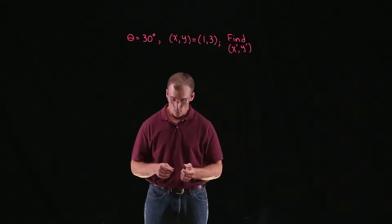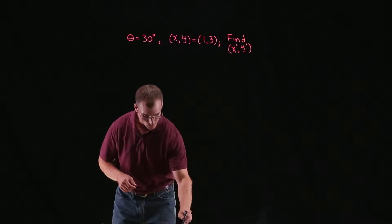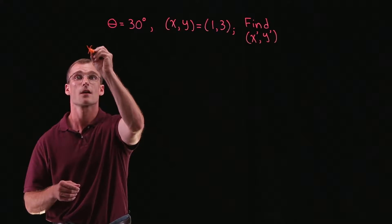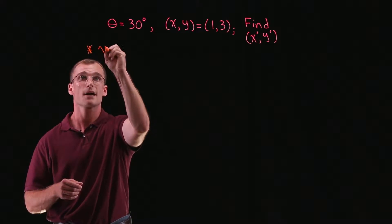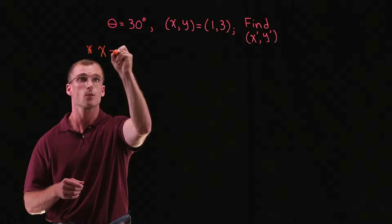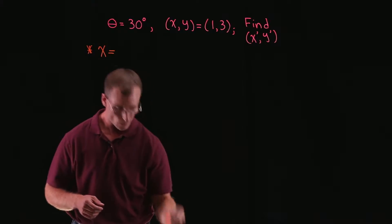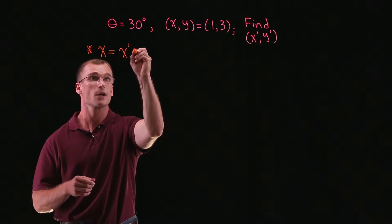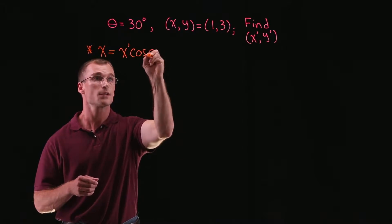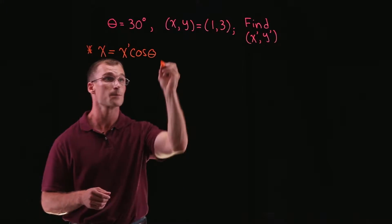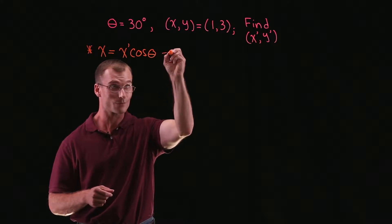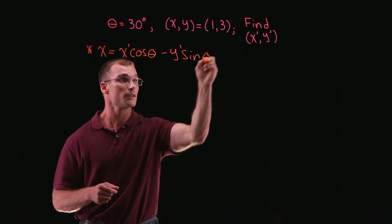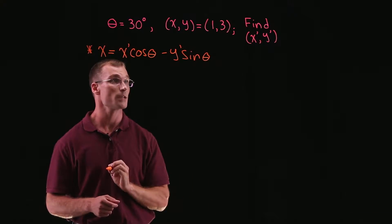What we can use is some conversion equations that we know. Namely, we know that x is related to x prime and y prime, so x is equal to x prime times cosine of the rotation angle theta minus y prime times sine of our rotation angle theta.